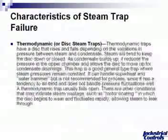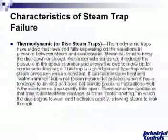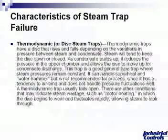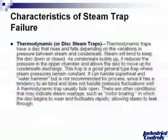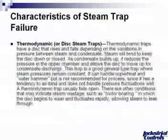This trap is a good general-purpose trap where steam pressures remain constant. It can handle superheat and water hammer, but it's not recommended for processes since it tends to air-bind and does not handle pressure fluctuations well. A thermodynamic trap usually fails in the open position. Other failure conditions include motor boating or rapid cycling, where the disc begins to wear and fluctuates rapidly, allowing steam to leak through. You'll find it on main headers, constant pressures, and tracing systems, but not on process systems where air locking can cause condensate backup.